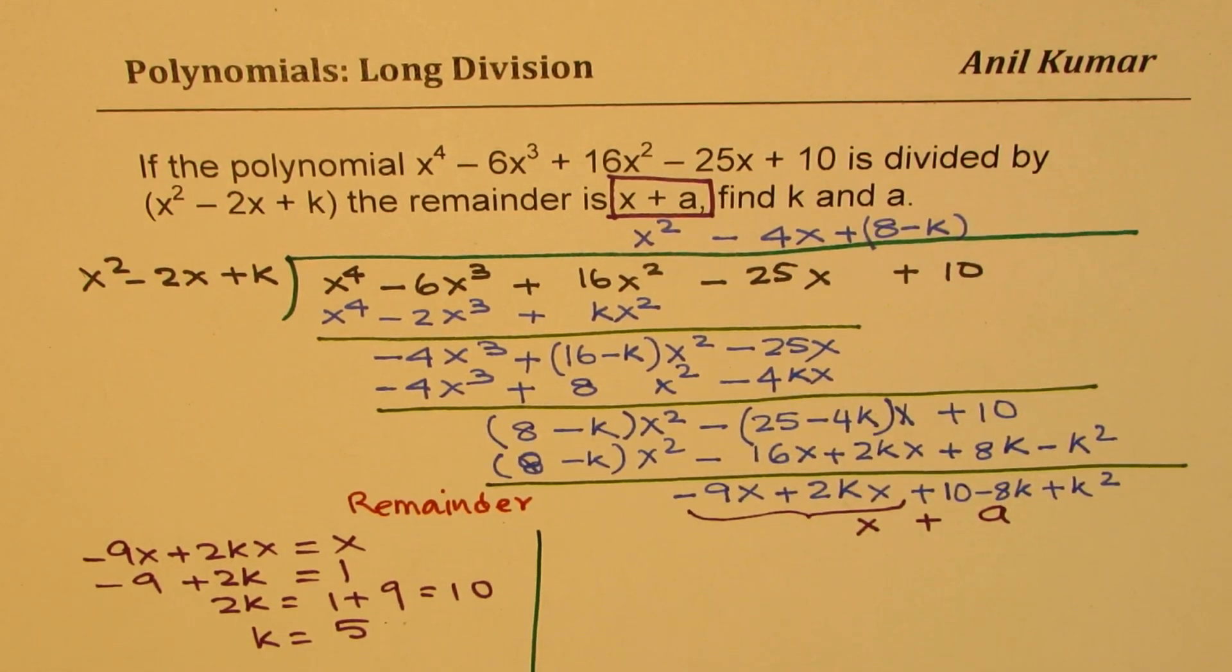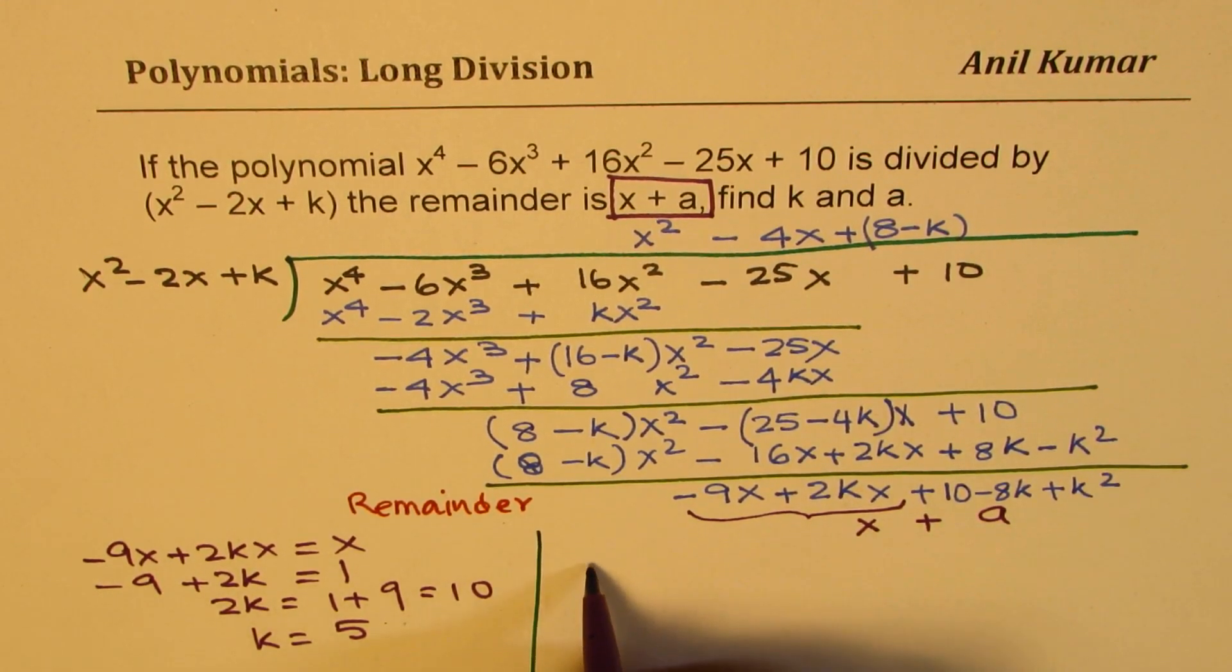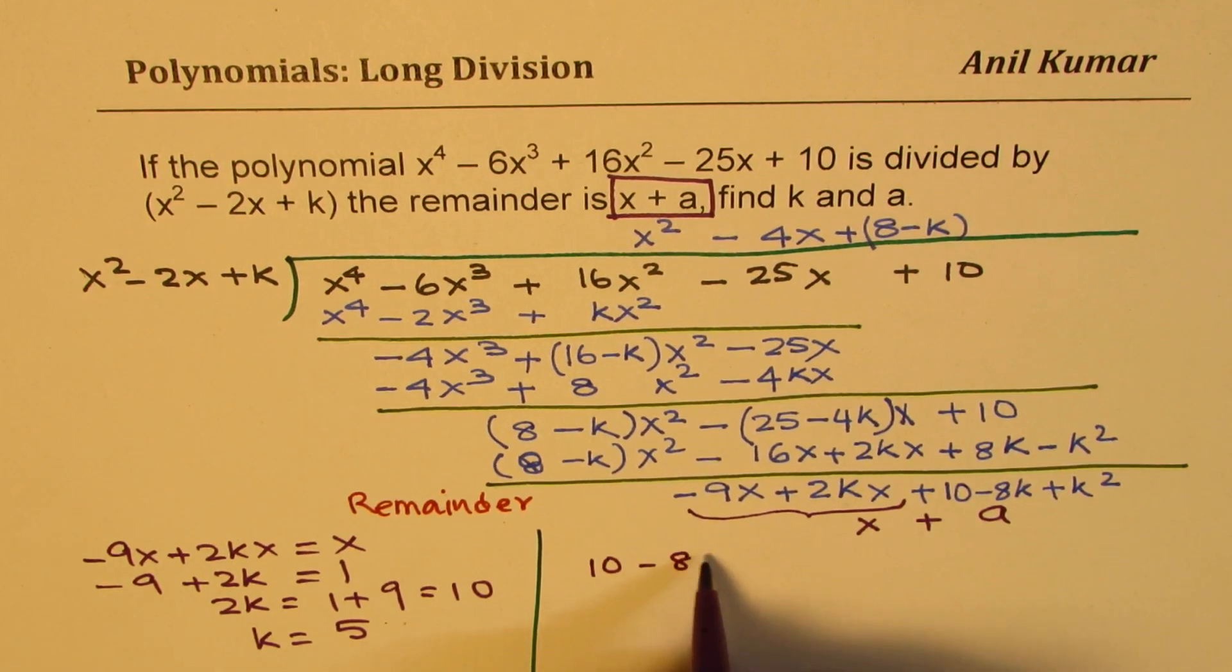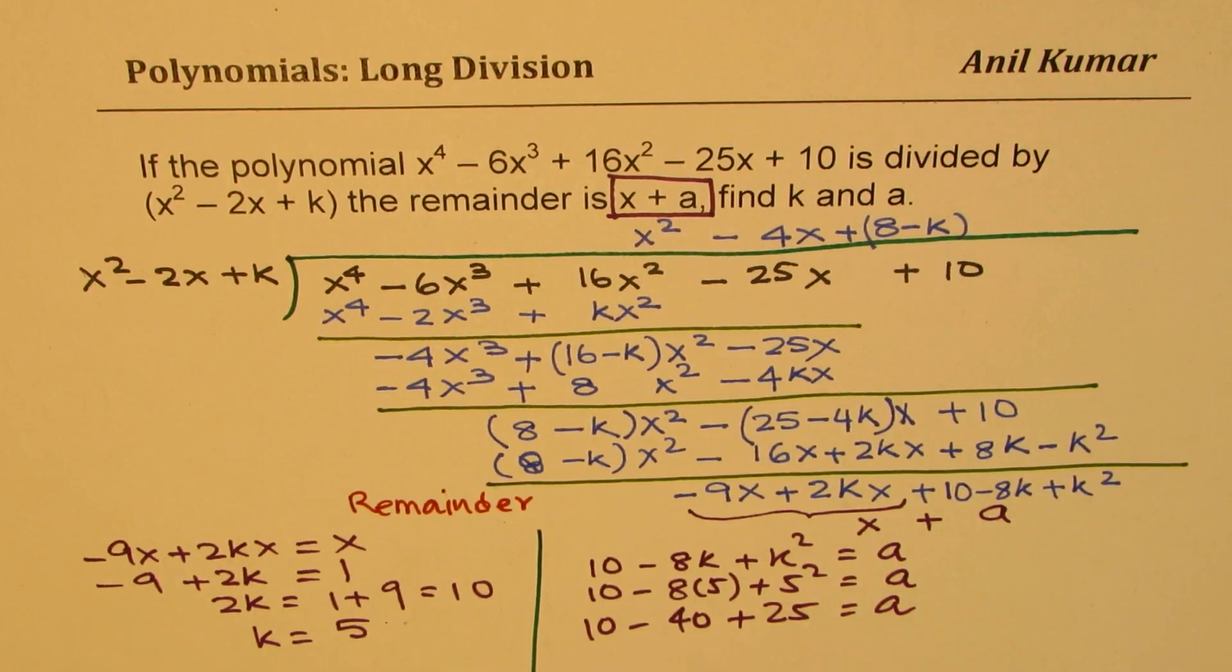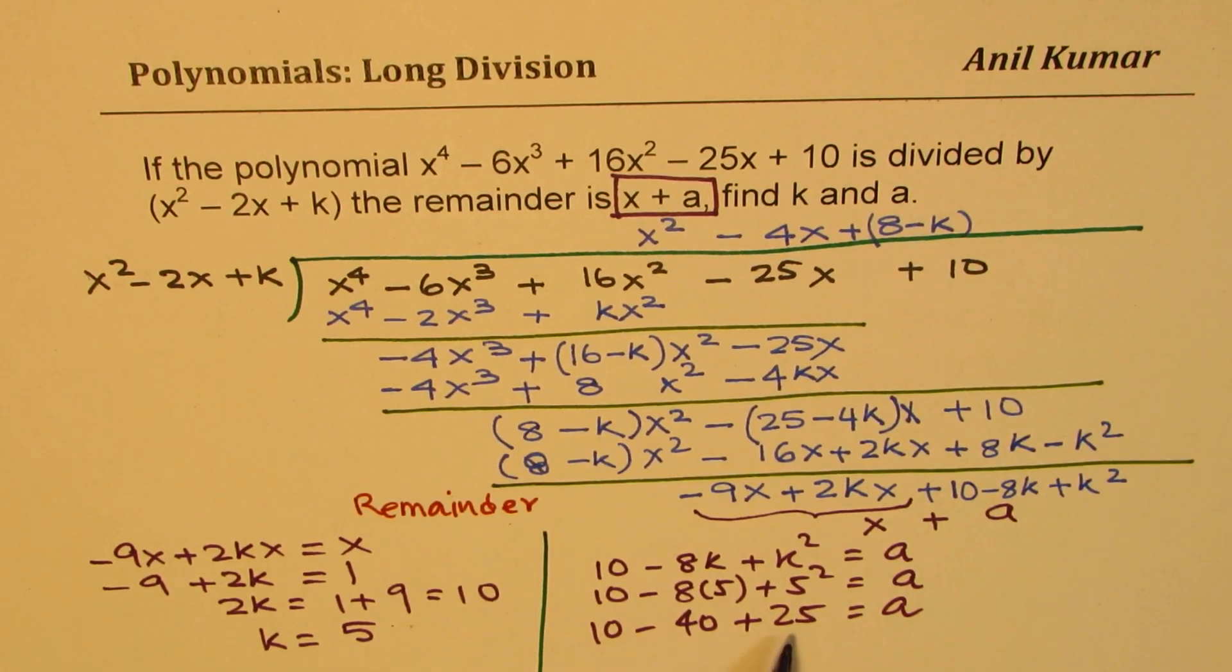Now the other part is supposed to be a. That is to say, 10 - 8k + k^2 should be equal to a. Now we know what k is. k is 5. Substitute 5 here. So we get 10 - 8 times 5 + 5^2. That is a. Which is 10 - 40 + 25 is equal to a. Is that clear to you?